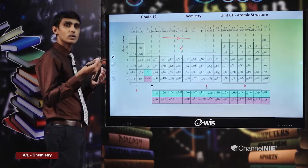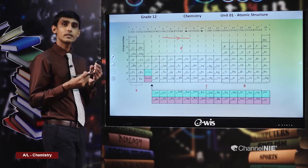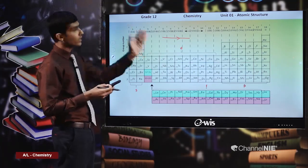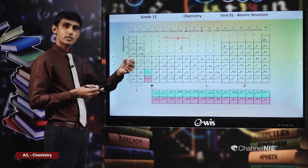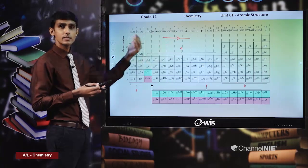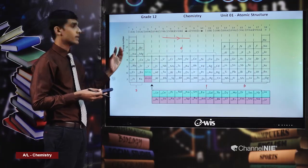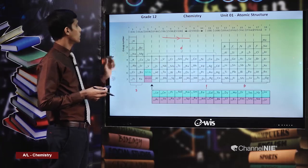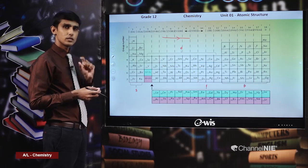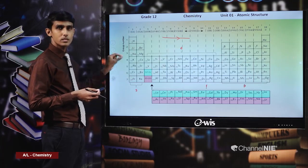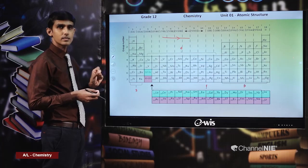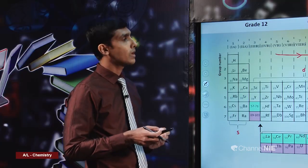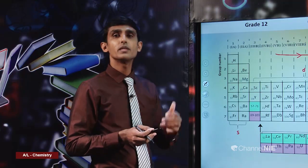Therefore, when moving from left to right, the tendency to remove electrons decreases — tendency to form cations decreases, tendency to form anions increases. The metallic character decreases and the non-metallic character increases. Also, on moving down a particular group, the principal quantum number of the last electron increases, meaning the size of the atom increases.